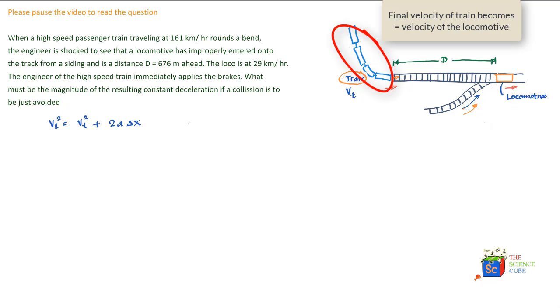You would see that the displacement of the train, Δx, would equal d, the length of the track that it has to cover, plus a certain distance that the locomotive would have moved in time t. Remember, time t is the total time from when the driver realizes there's a locomotive ahead and just manages to stop before the collision.